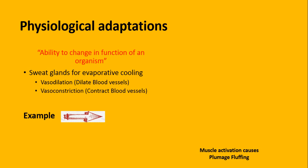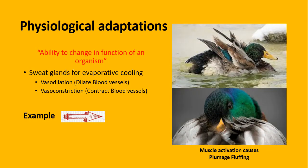Physiological adaptations کی بات کریں تو these are the ability to change in function of an organism. Function کے لحاظ سے mammals میں sweat glands appear ہونے لگے for evaporative cooling۔ Vasodilation میں skin کے side پر جو blood vessels ہوں گی وہ dilate کر جائیں گی جس سے maximum heat outside the body move کرے گی۔ Vasoconstriction میں contract ہو جائیں گی اور minimum heat outside generate کرے گی۔ اس طرح mammals thermoregulation کو ان دو processes سے control کر سکتے ہیں۔